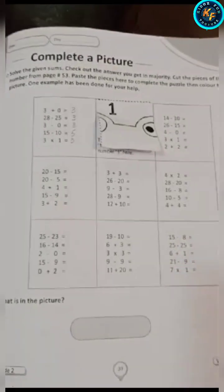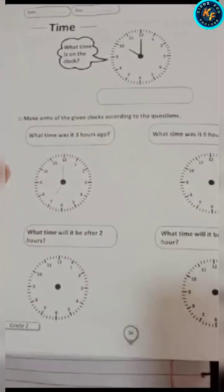Like this, the number 1 is here. Student, complete the picture according to the given instruction. Then what is in the picture? You have to write here what is in the picture. Color this picture carefully.